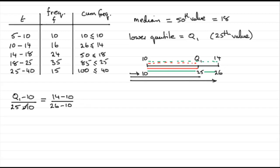So all I need to do is to simplify this. We've got Q1 minus 10 over 15 equals 14 take 10, which is 4, over 26 minus 10, which is 16. Rearrange this to get Q1 as being 4 over 16 times 5 and then plus 10. And what you get for that is 11.25.